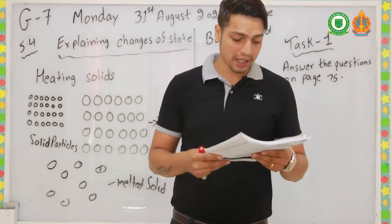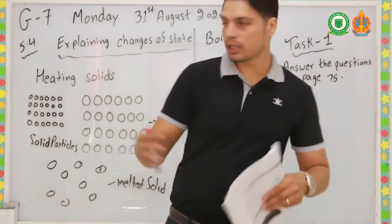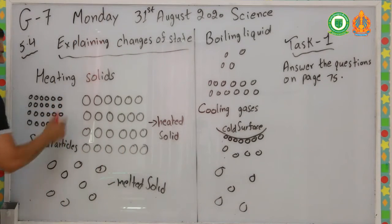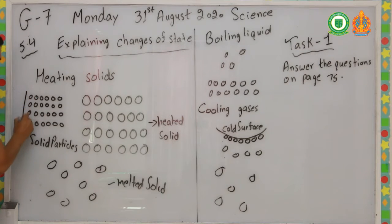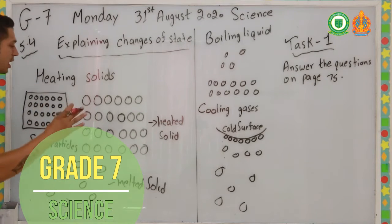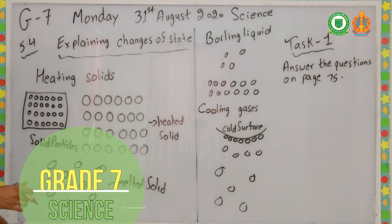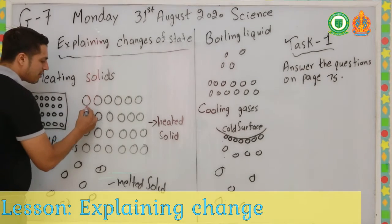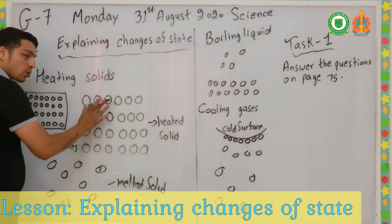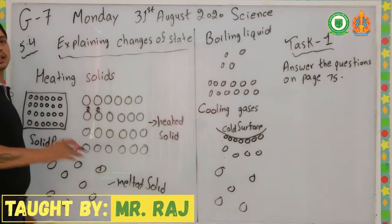Now let me explain with a diagram. When we heat a solid, you can see the particles are arranged in a fixed pattern before heating. When we apply heat, the particles expand — they become larger — and they start to vibrate. But they still have attractive forces between each other, so they are still held together in a fixed pattern, just expanded.